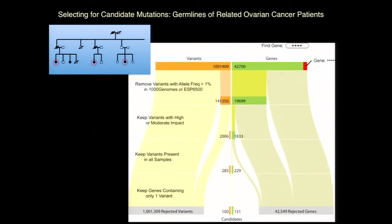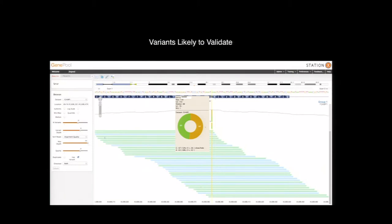We removed all variants with allele frequency greater than 1 percent. We kept variants with either a high or moderate impact. We kept variants present in all samples — in other words, all three individuals in this family had to have the same variants if we believed it to be a Mendelian trait. We kept genes containing only one variant; if a particular gene had seven variants in it, we excluded it. From a large starting number, we came down to a more reasonable number, but still too many genes for functional validation.